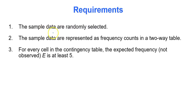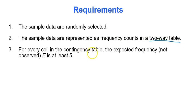The requirements to use this method are that the data must be randomly sampled, the sample data are represented as frequency counts in a two-way table or contingency table, and for every cell in the contingency table, the expected frequency — not the observed frequency — is at least 5.